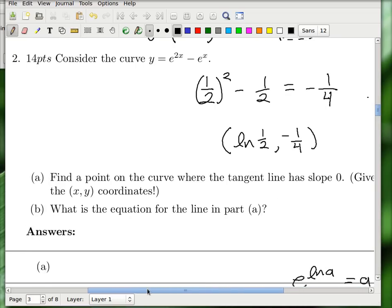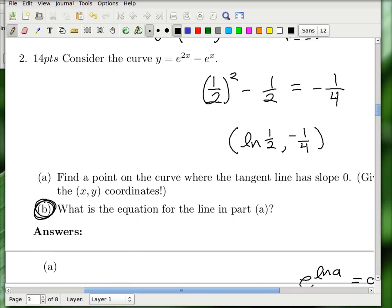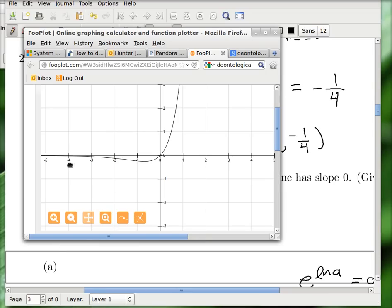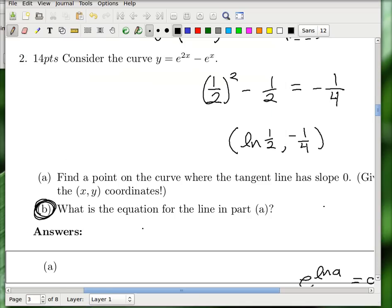Now, what is the equation? Part b is saying, hold on buddy, what is the equation for the line in part a? It's not as hard as it sounds, because the line in part a is horizontal, so what is the equation of a horizontal line? It's just y equals the constant value. And the constant value is minus 1 quarter, so the answer for part b is y equals minus 1 fourth, and you're done. That's it, so that one's over.